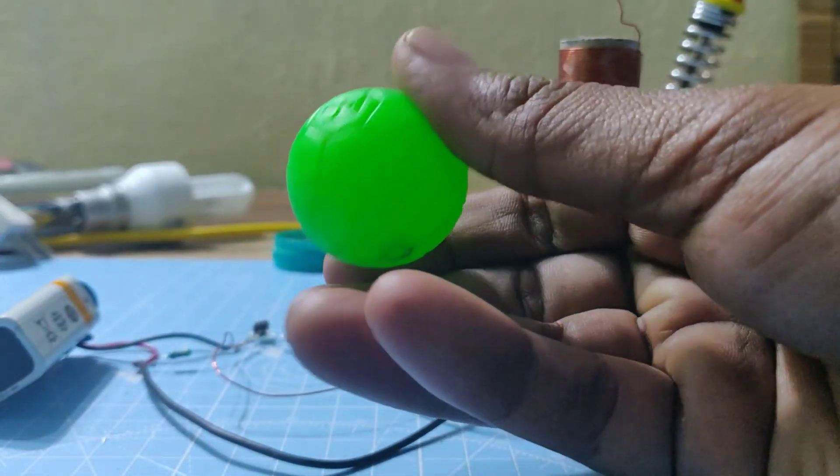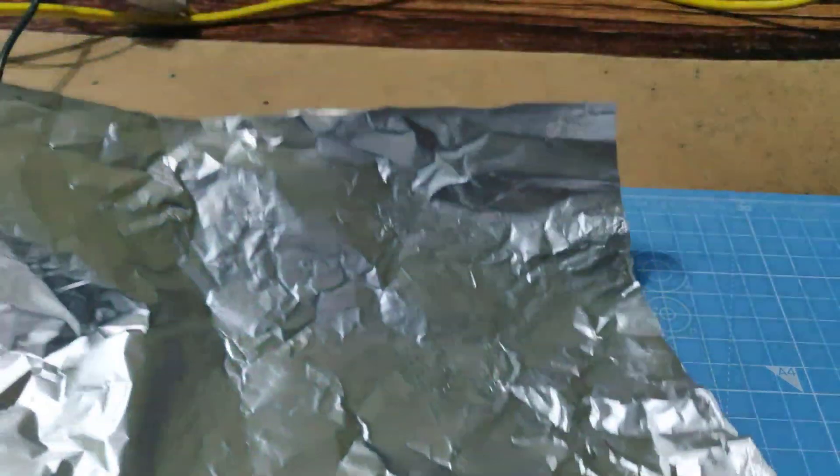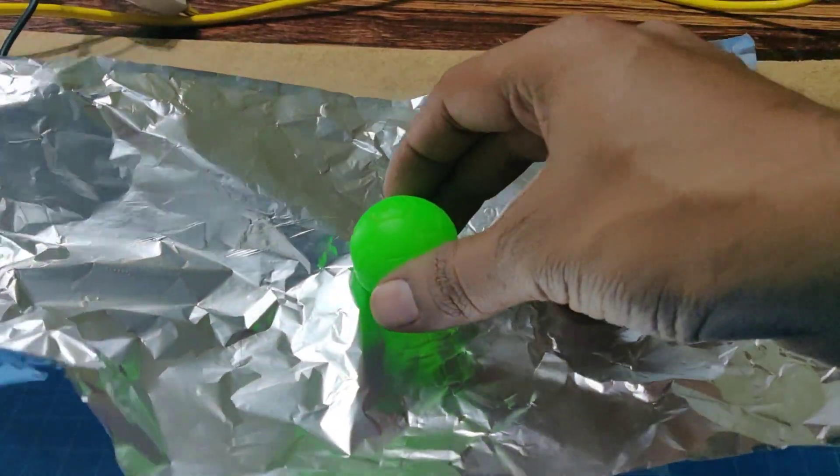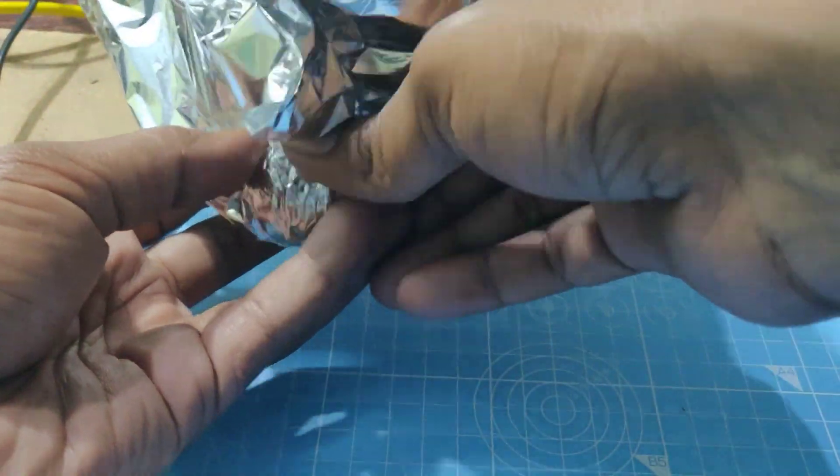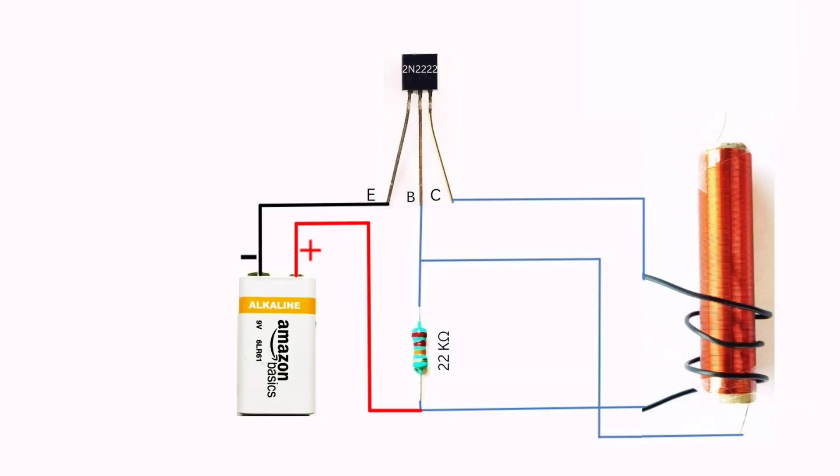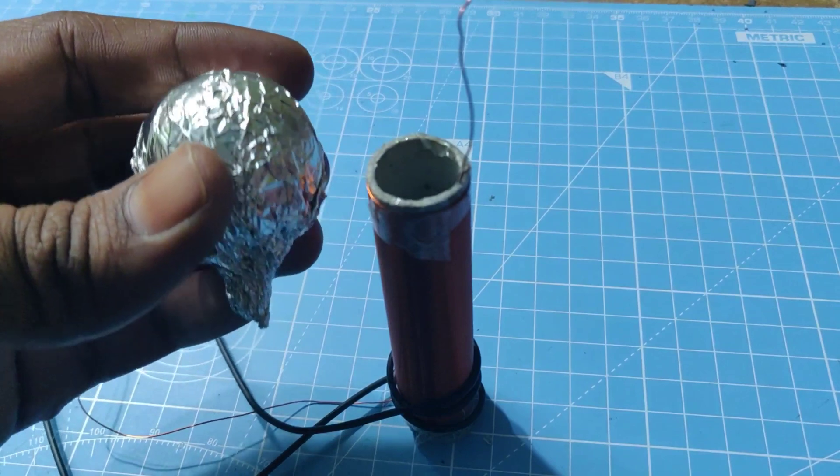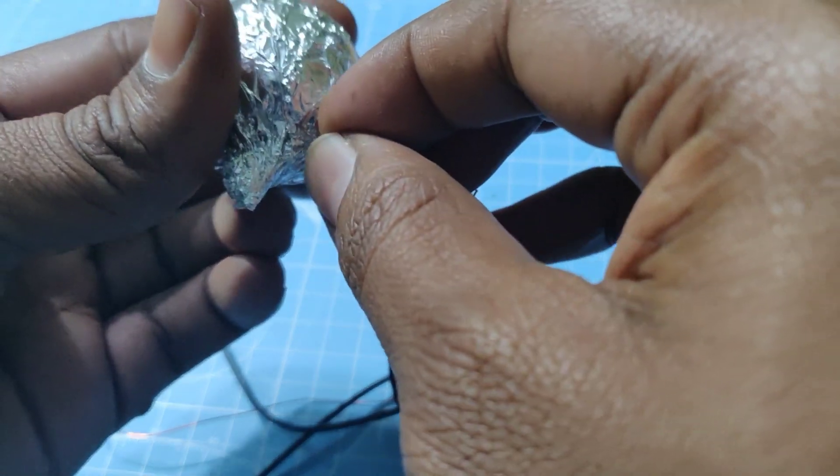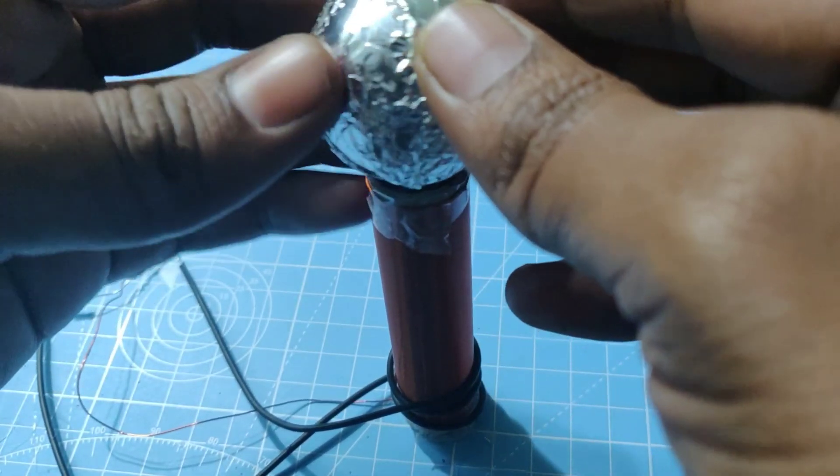To store the charge, enclose a plastic bulb in aluminum foil and place it on top of the secondary coil. Make sure the coil touches the aluminum foil.